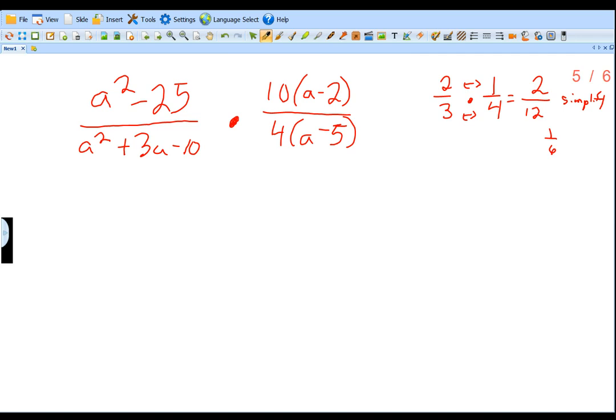Similar process when we have rational expressions. But we're going to go back to the rules that we did with simplifying rational expressions without the multiplication. First step is going to be factor where we can. So let's see. This first fraction, we have a squared minus 25 over a squared plus 3a minus 10. Can we factor each of those? We can.